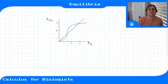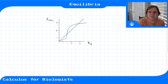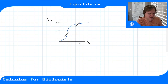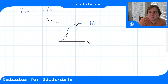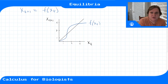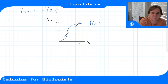When talking about cobwebbing to generate graphical solutions, an equilibrium point is anywhere where your update function intersects with the identity line. So if our model is x(t+1) = f(x(t)), this discrete time dynamical system gives us x at time t+1 as some function of x at time t — that function is our update rule.